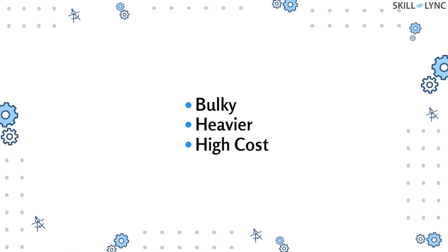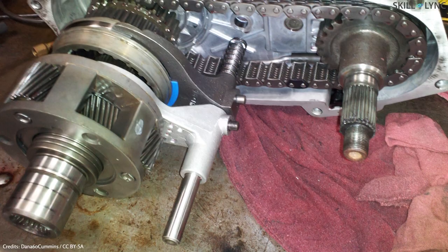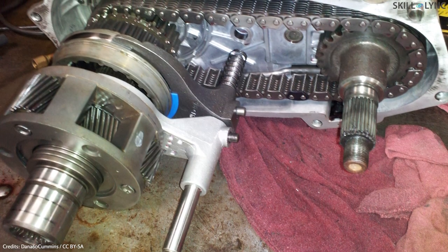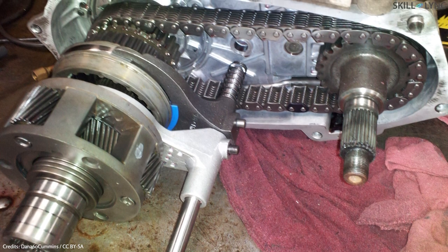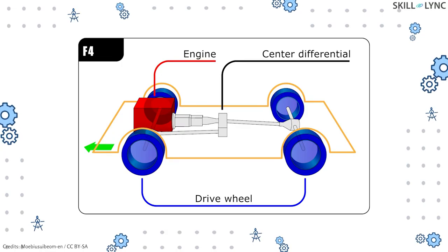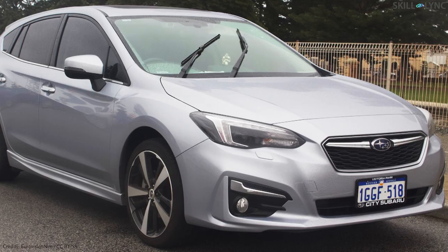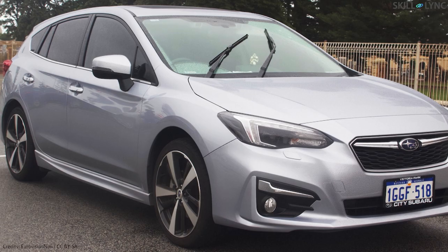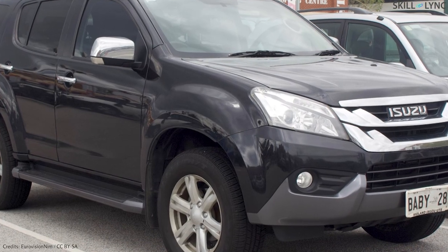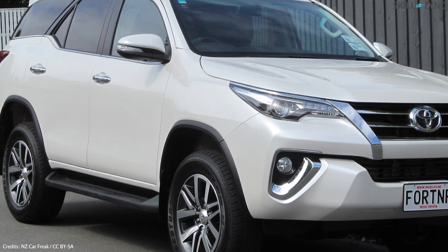On the other hand, the system is bulky, heavier, and of high cost. This type of layout is mainly used in off-road vehicles like jeeps. Here the transfer case is used to transmit an equal amount of torque to both front and rear axles. If a center differential is used to transmit power, then the drive is said to be all-wheel drive, where the front and rear axles can rotate at different speeds. An example of a vehicle that uses this layout is the Subaru Impreza, the Isuzu, and the Fortuner. With this, we have seen the most commonly used layouts in automobiles.